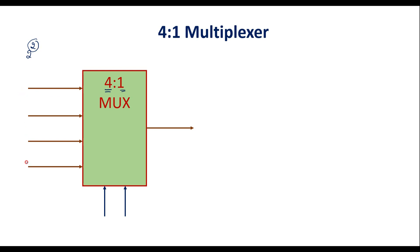These are the 4 input lines. Let us assume D0, D1, D2, and D3 are the input lines. It also has 2 select lines; let us assume S1 and S0 are the select lines. Here I will consider S1 as the MSB and S0 as the LSB. Let Y be the output line. This is the block diagram of the 4-to-1 multiplexer.